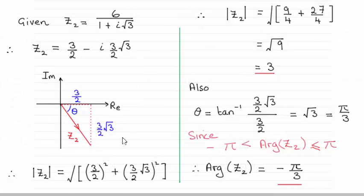Hi there. What we have here is a typical question where we've got a complex number, in this case z2 equals 6 over 1 plus i root 3, and asked to find the modulus and argument. The modulus turns out to be 3, and the argument turns out to be minus pi upon 3 radians.